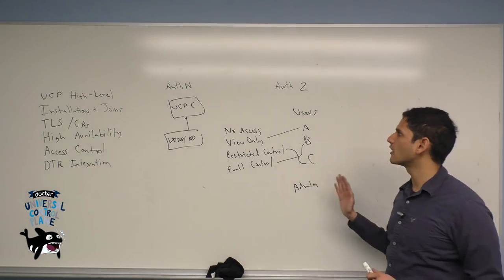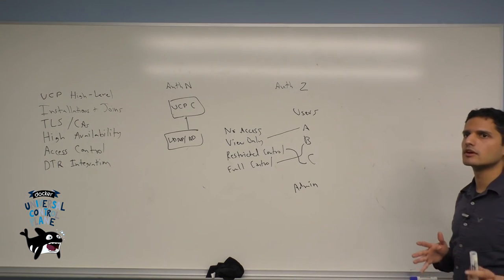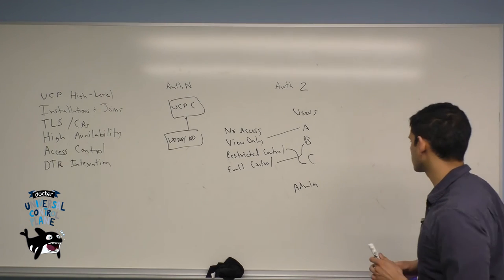So user default permissions are all well and good when you want coarse-grained access. But what happens when you want to set more granular access to specific containers?